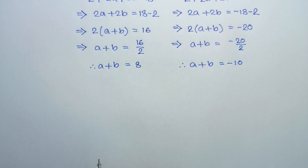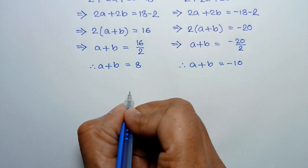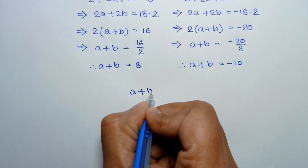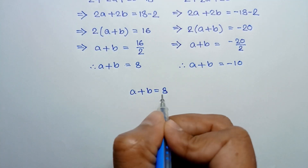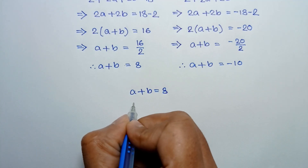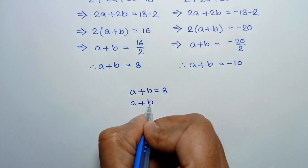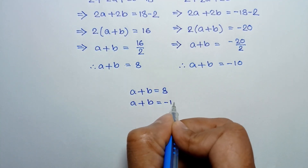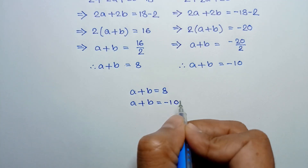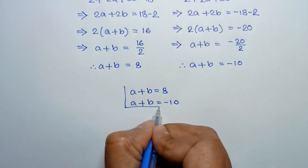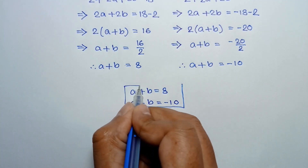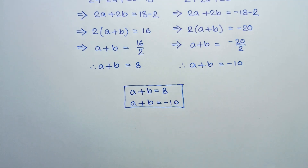So we have got a plus b is equal to 8 and negative 10. These are the two values of a plus b. If you like this video, please subscribe to my channel. Thanks for watching.